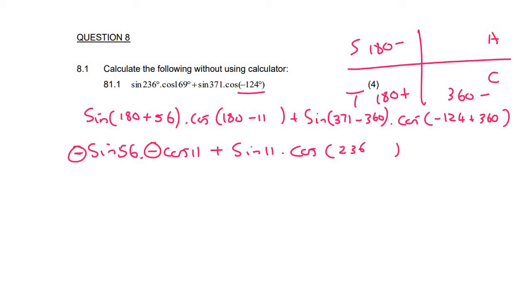So I'm going to simplify a little bit. What I notice is that we have two negatives here. Now, two negatives, we all know, make a positive. So that's going to become sin 56 times by cos 11 plus sin 11. And then this cos 236 can be changed to 180 plus 56. And then we'll go once more.